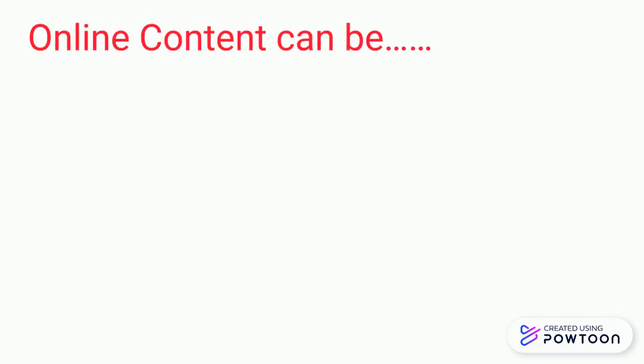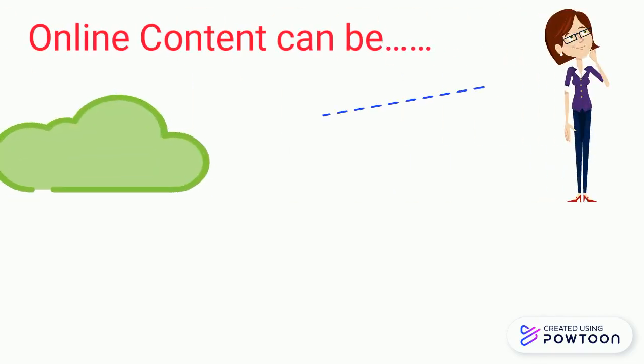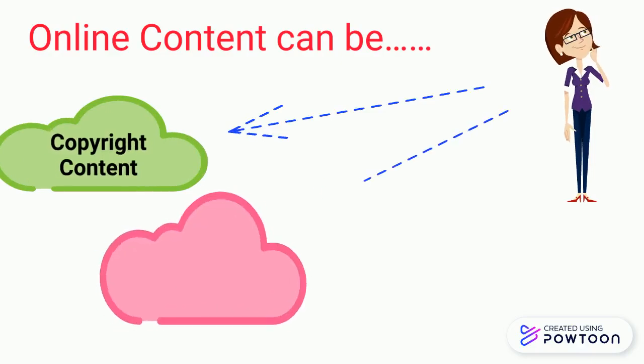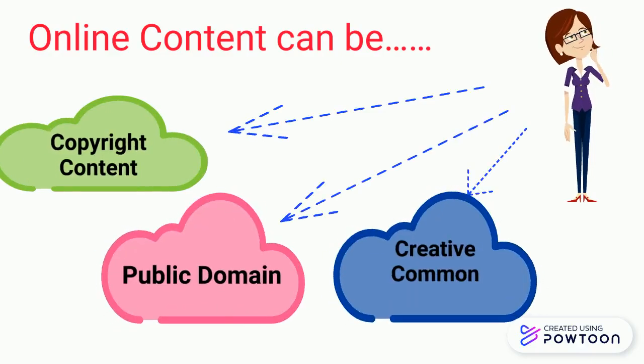Online content can be categorized into three categories: number one, copyright content; number two, public domain; and number three, creative common content.